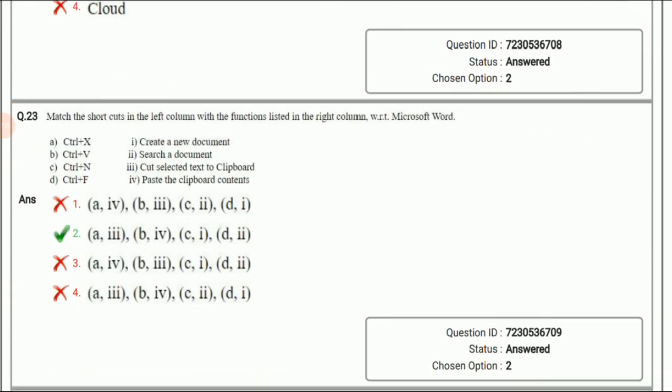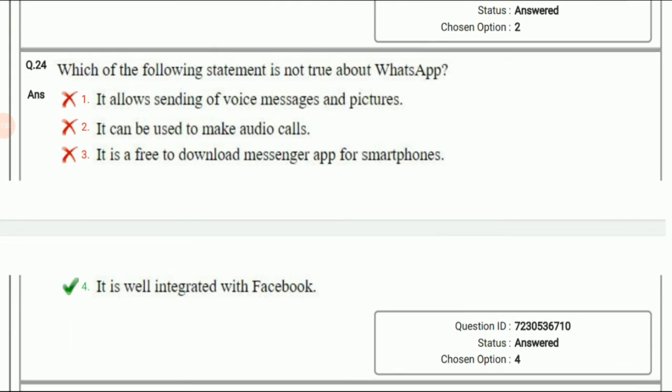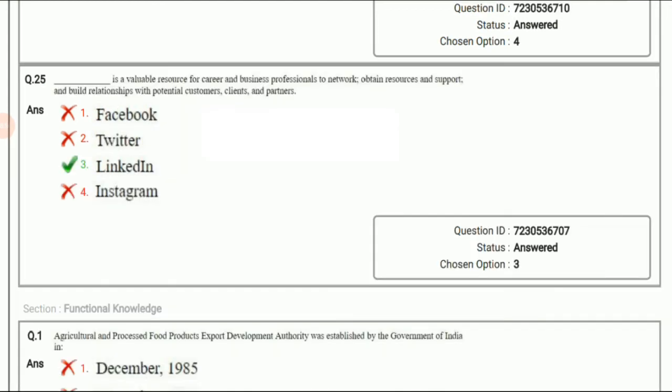Next question: We have to match the shortcuts with their functions in Microsoft Word. Control+X is used to cut the selected text. Control+V is used to paste. Control+N is used to create a new document. And Control+F is used to search any particular document. Next question: Which of the following statement is not true about WhatsApp? A very easy question. The wrong statement is 'it is well integrated with Facebook'. This is not a feature of WhatsApp. Now the next and last question: Dash is a valuable resource for career and business professionals to network, obtain sources and support, and build relationships with potential customers, clients, and partners. Again, a very easy question and we all are using this. The answer is LinkedIn.